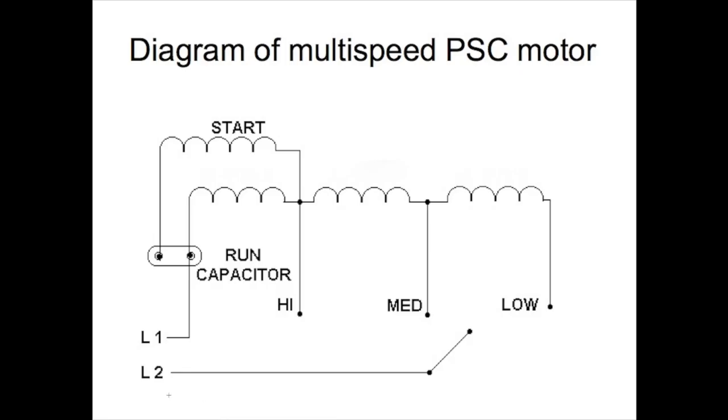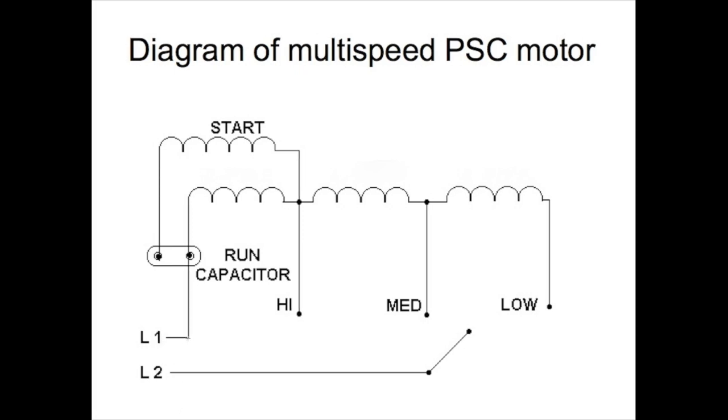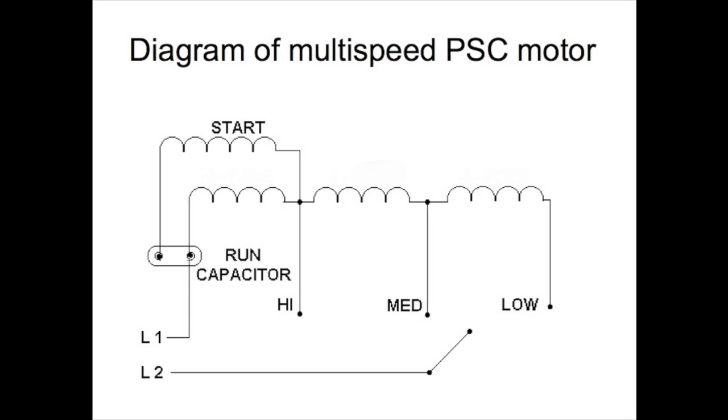Okay, here we have a schematic diagram of this motor. Now, if you look at L1, it goes over to the run cap. It's just using the run cap as a terminal point. And this is the run winding here. This is the extensions of the run winding.